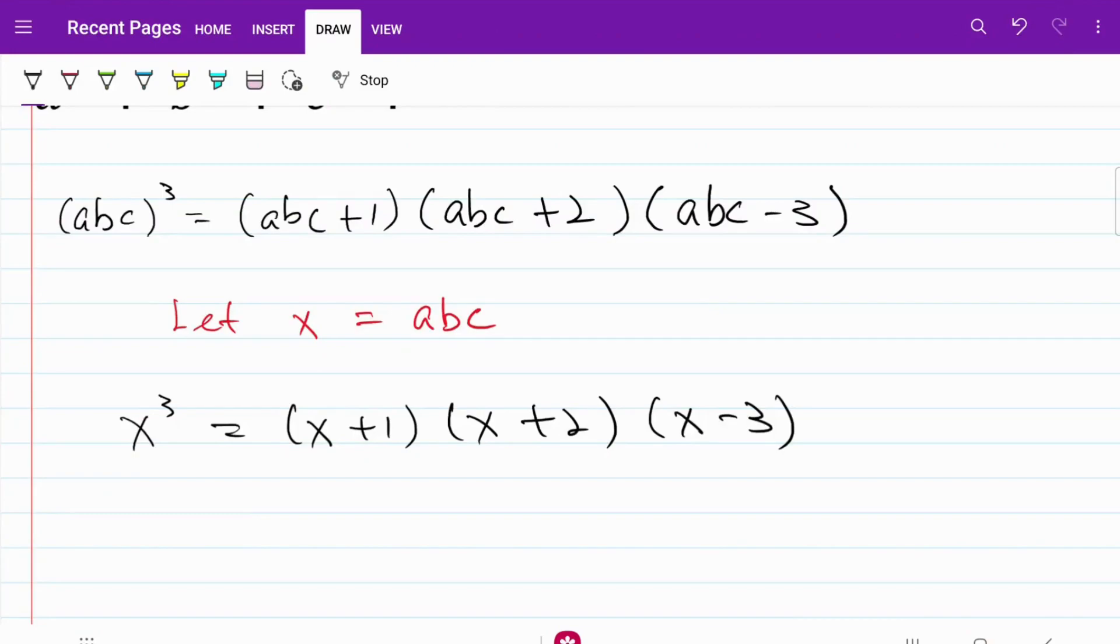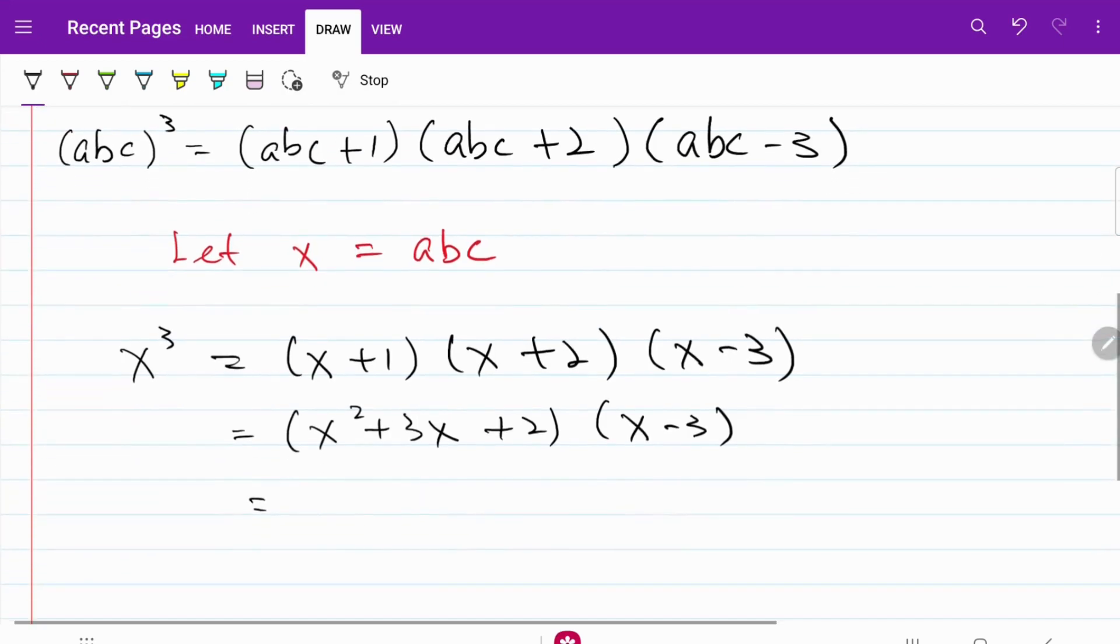Opening up the bracket, I have on the right hand side, x square plus three x plus two multiplied by x minus three. From here, that's equal to x cube minus three x square minus nine x plus two x minus six.